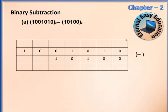We start from the right side. 0 minus 0: the result is 0. 1 minus 0: the difference is 1. 0 minus 1: I'm borrowing 1 from the next position, so that bit turns to 0 and the borrowed value comes as 1 here. Even though it is now 1 and 1, it is a borrowed bit, so the net result is 1. Then 0 minus 0: the result is 0. Since this number is 0, I have to take from the next position.